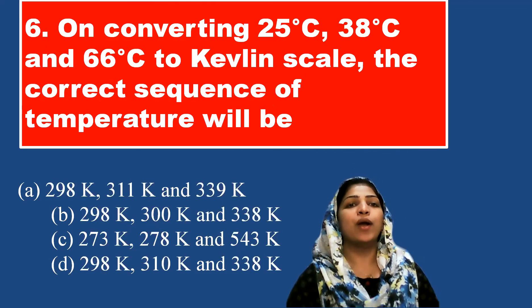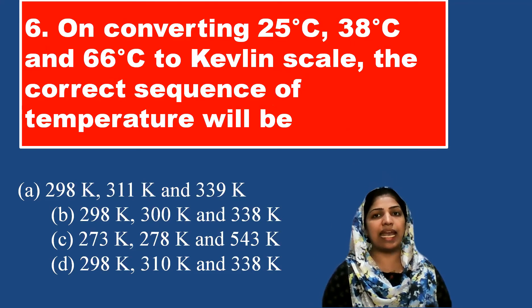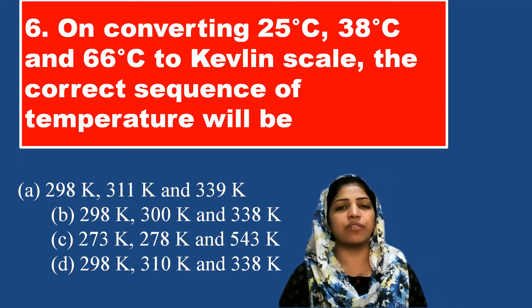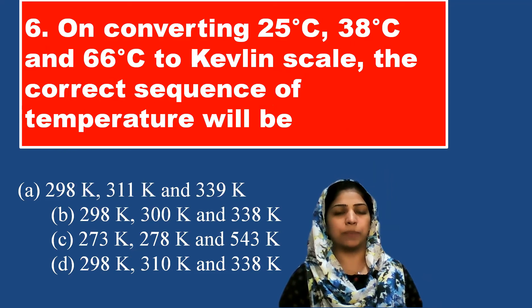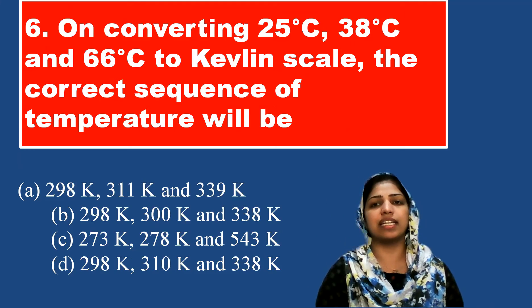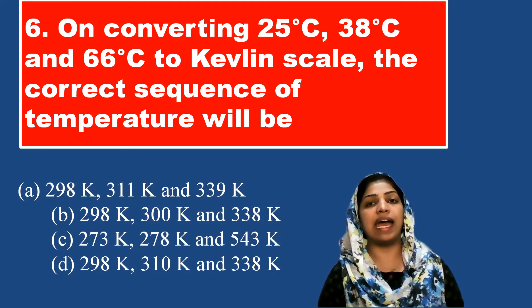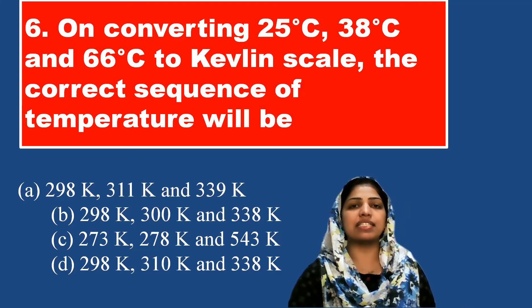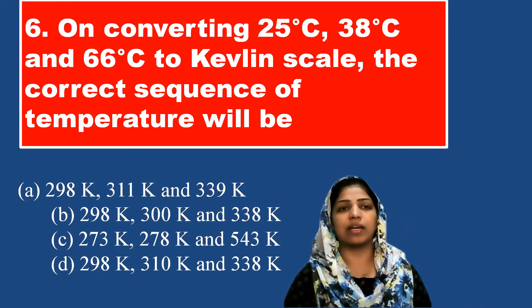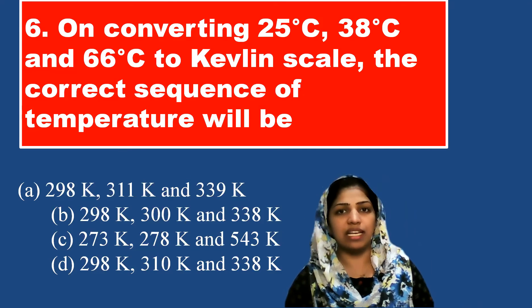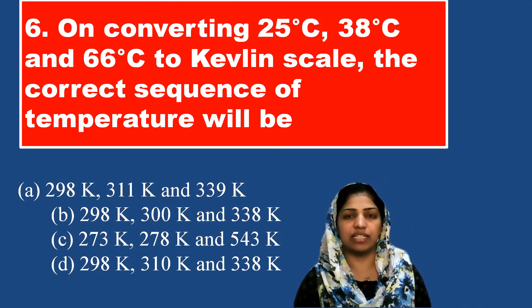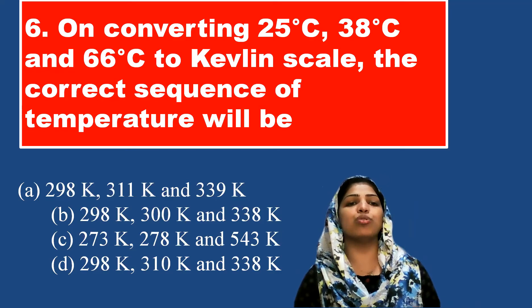On converting 25°C, 38°C, and 66°C to Kelvin scale, we add 273 to degrees Celsius to get Kelvin. So 25°C + 273 = 298 Kelvin.